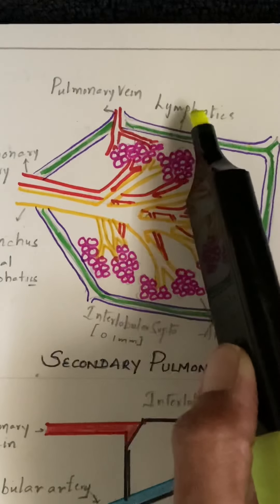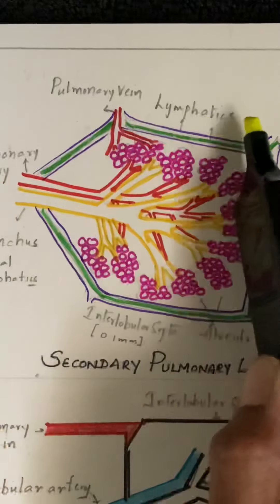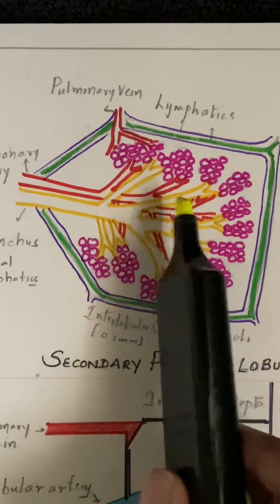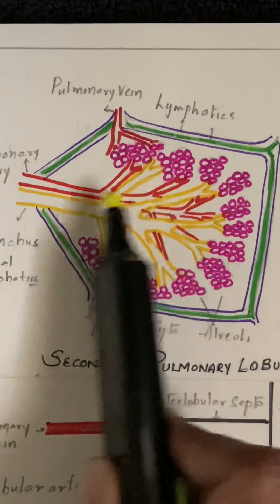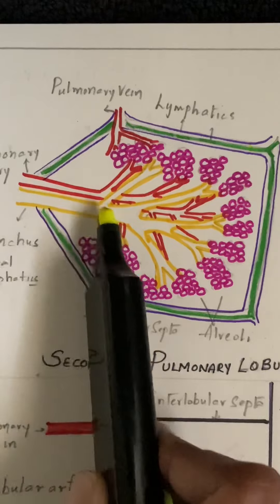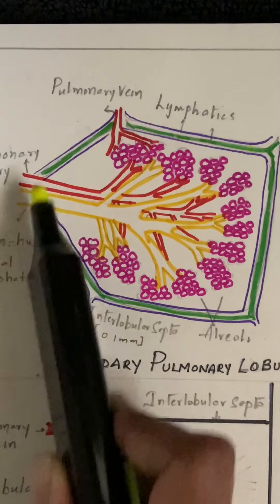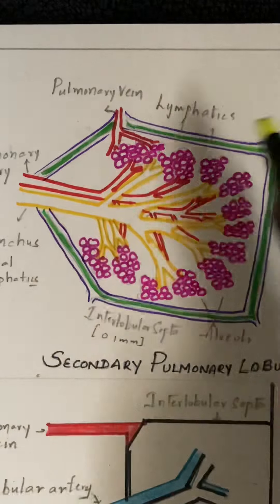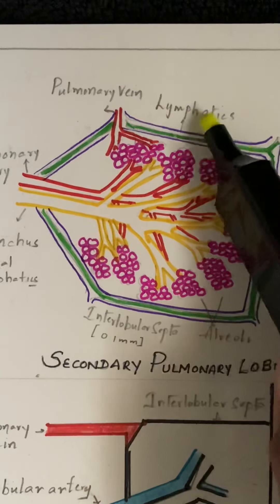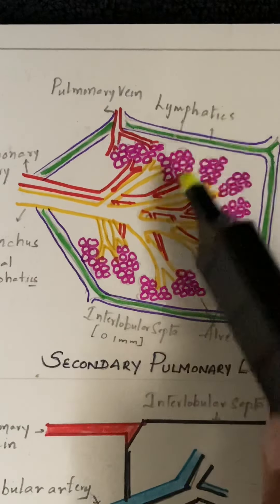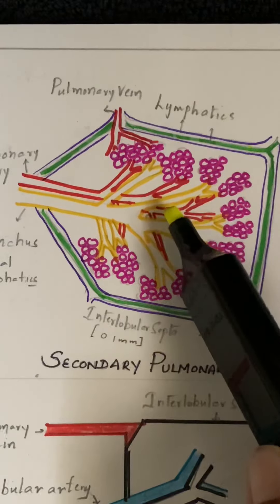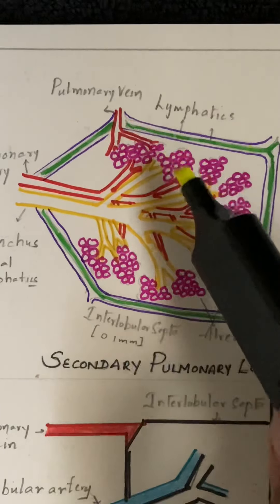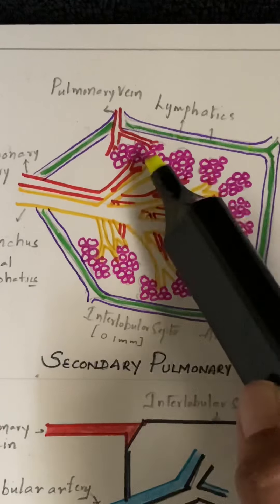Coming to septal structures, we have a pulmonary vein, lymphatics, and interstitial components. In the centrilobular structures, we have a feeding pulmonary artery, bronchiole, afferent lymphatics, and the surrounding peribronchovascular interstitium. Coming to lobular parenchyma, it is situated between the outer septa and the central lobular structure — that is the pulmonary acinus.